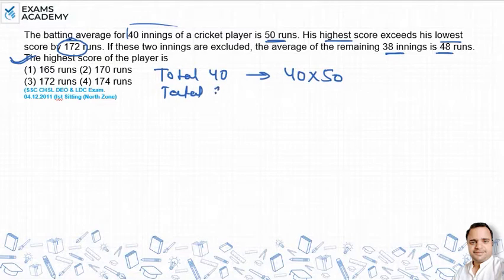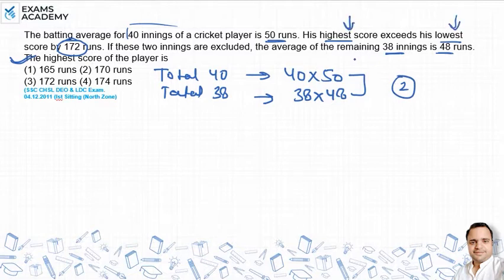For 38 innings, it will be 38 into 48. If we take 38 innings, we will be minus, we will have 2 innings remaining. What will be the value of these 2 innings? The highest and the lowest.